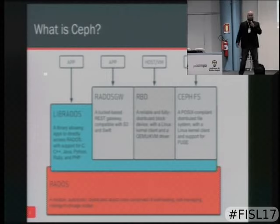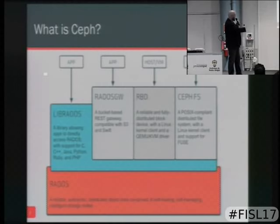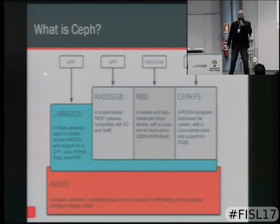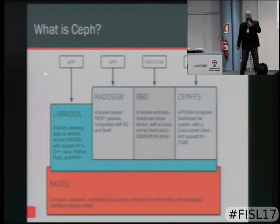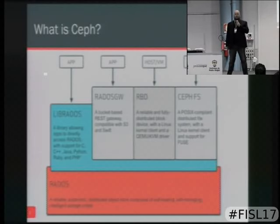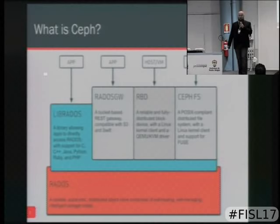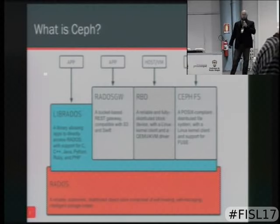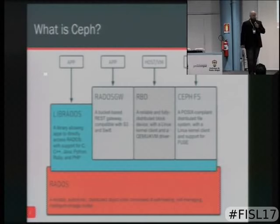Being an object store means you don't have all the POSIX semantics that go along with many of your filers. At the very lowest level you can see Rados — that is written for Ceph, it is a piece of Ceph, and it handles the data replication and data placement within your cluster. Above that, another unique feature is that Ceph offers the ability to interface with this object store via an object, block, or file interface, or via the librados library, which has bindings for Perl, Python, PHP, and more.